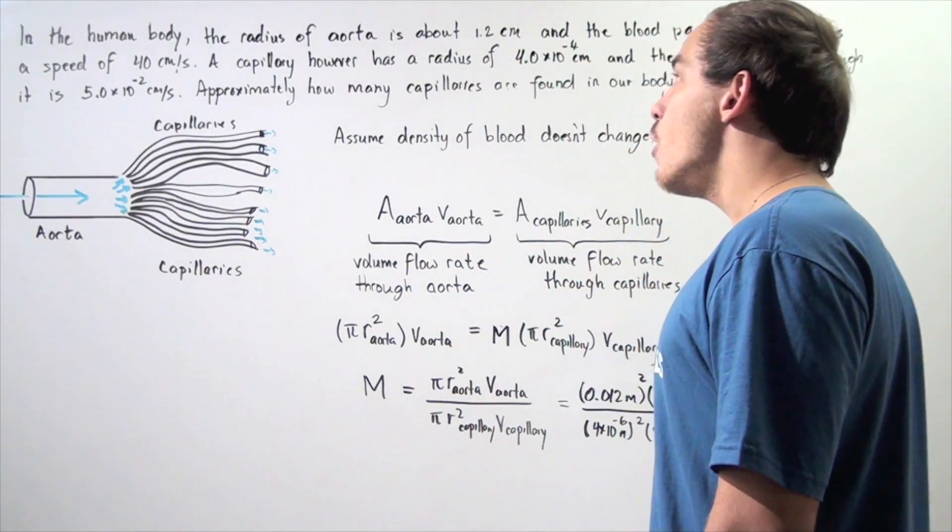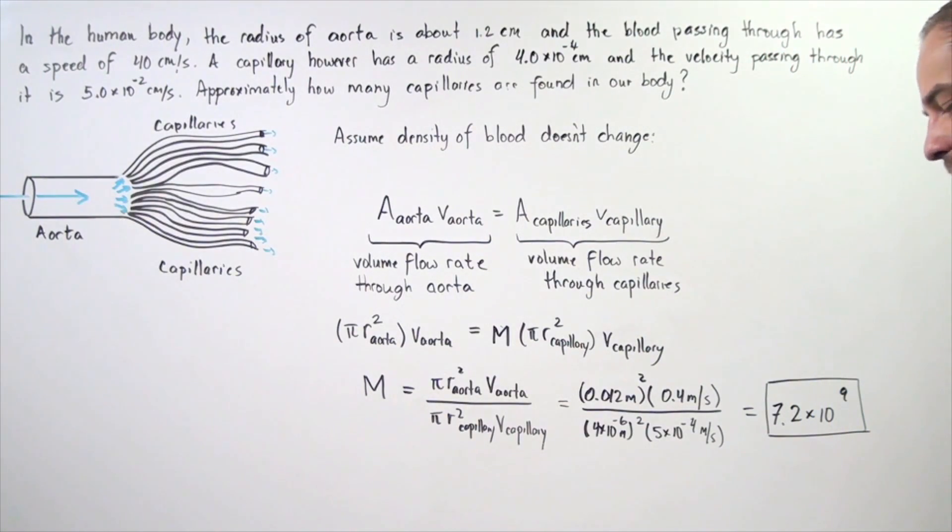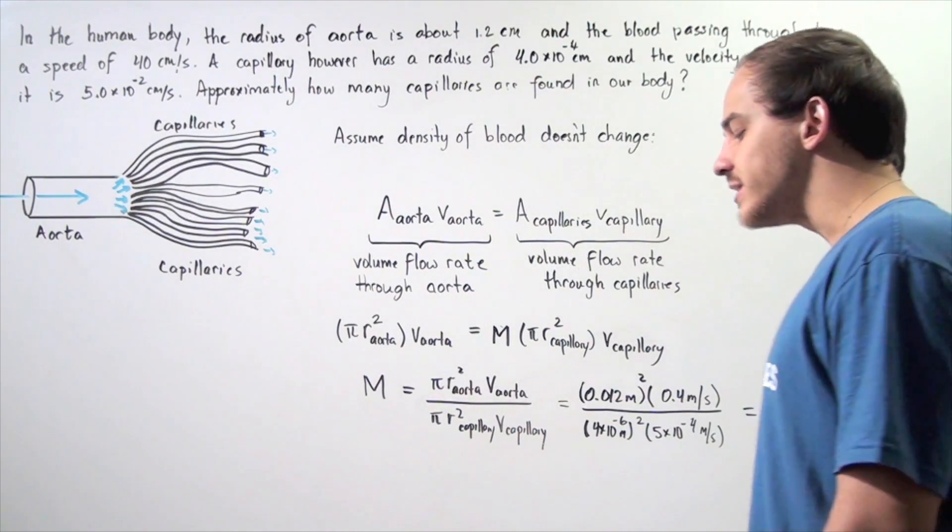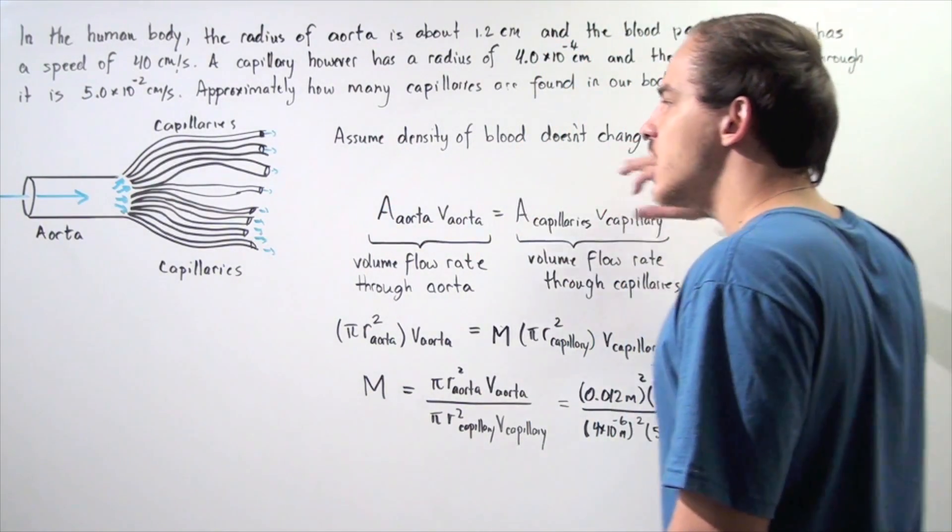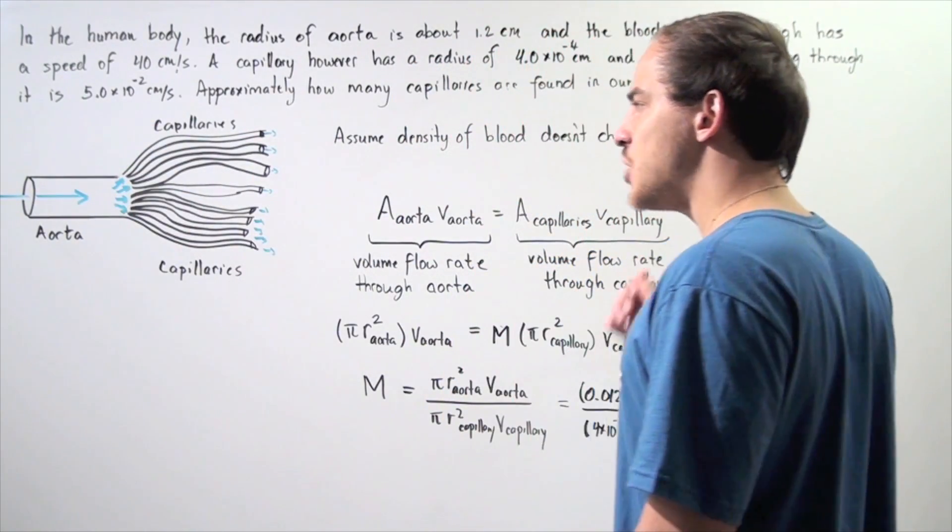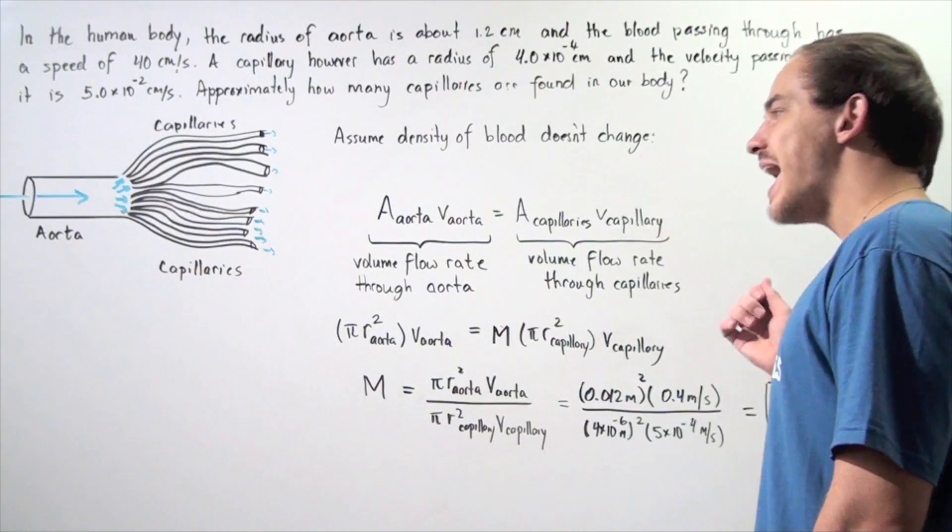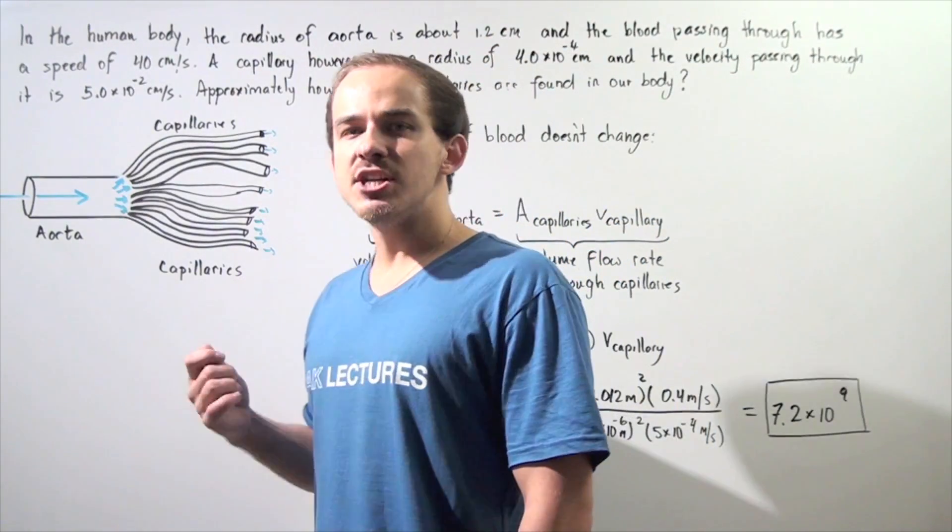Approximately how many capillaries are found in our body? We begin by making two important assumptions. Assumption number one, the density of the blood within our blood vessels does not actually change. It remains constant. And our blood experiences laminar flow.